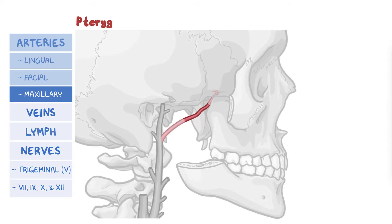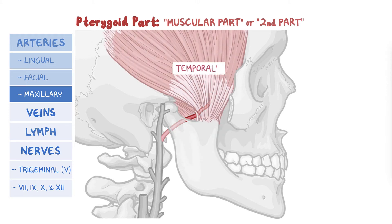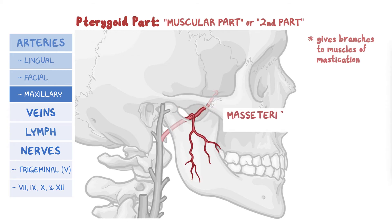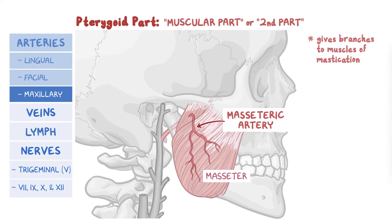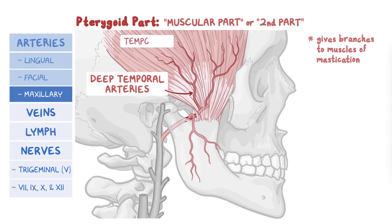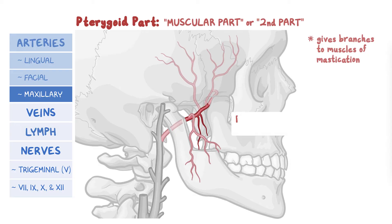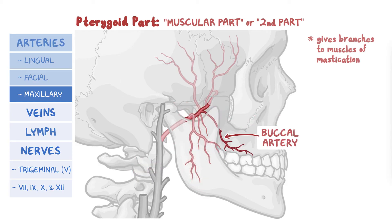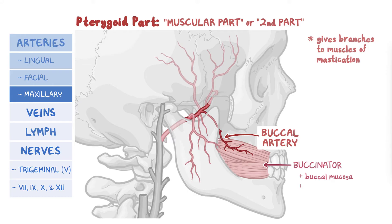Next, the pterygoid part, also known as the muscular part or second part, runs between the temporalis and lateral pterygoid and gives branches to the muscles of mastication: the masseteric artery to the masseter muscle, the deep temporal arteries to the temporalis muscle, and the pterygoid branches to the medial and lateral pterygoid muscles. Another branch, the buccal artery, supplies the buccinator muscle, the buccal mucosa, and the skin.